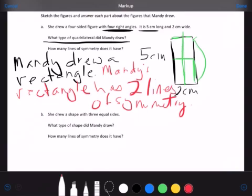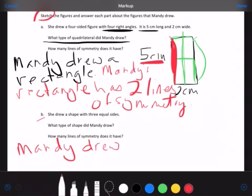Letter B. She drew a shape with three equal sides. So right there, it's going to be a triangle. What type of shape did she draw? So we write, Mandy drew a triangle. I need to sketch it so three equal sides is going to look something like that, right?